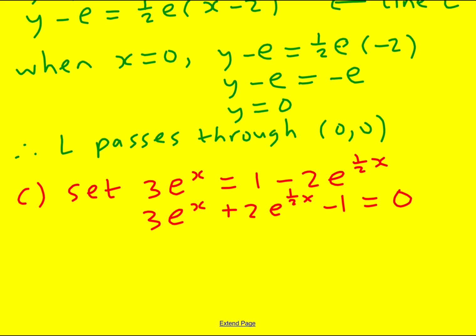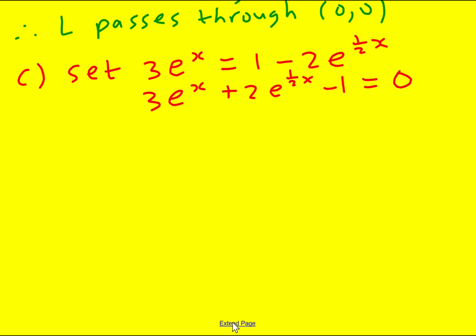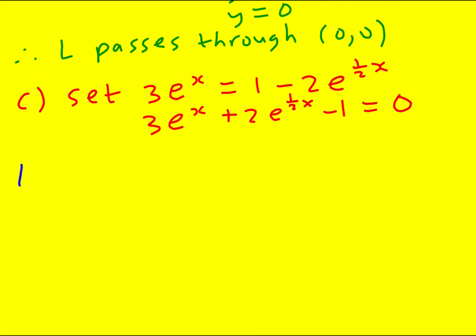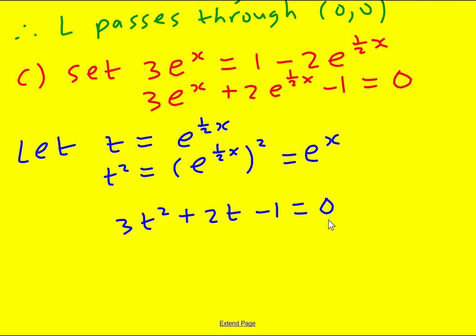This doesn't look very nice, but there is something going on here. I have a hidden quadratic. Let t equal e to the half x, because t squared will then equal e to the x. I've got a hidden quadratic: 3t squared plus 2t minus 1 equals 0. Let's see if it factorizes, 3t and t. I need a plus 1 here and minus 1 here. So t equals a third or minus 1.